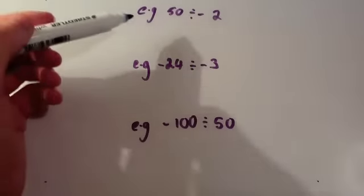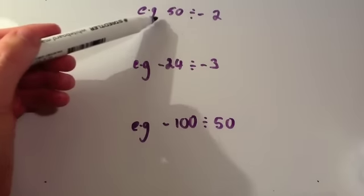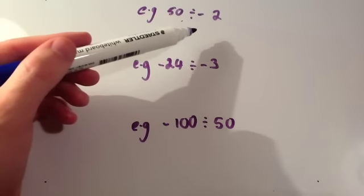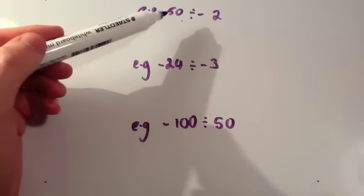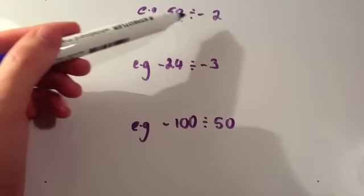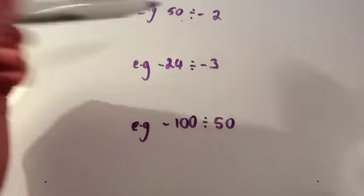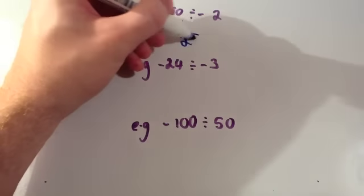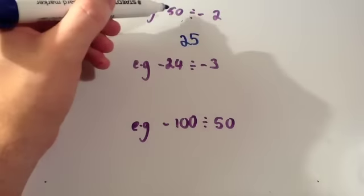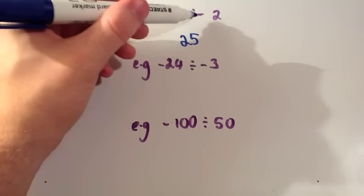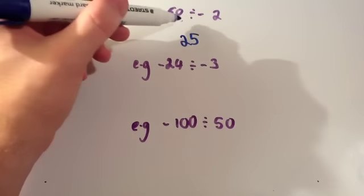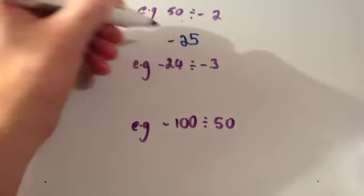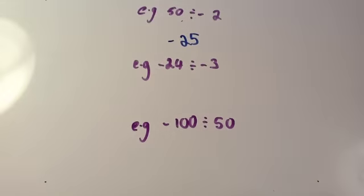Let's look at a few examples. The first one is 50 divided by negative 2. Well, 50 divided by 2 is 25. And a positive divided by a negative is a negative. So the answer is negative 25.